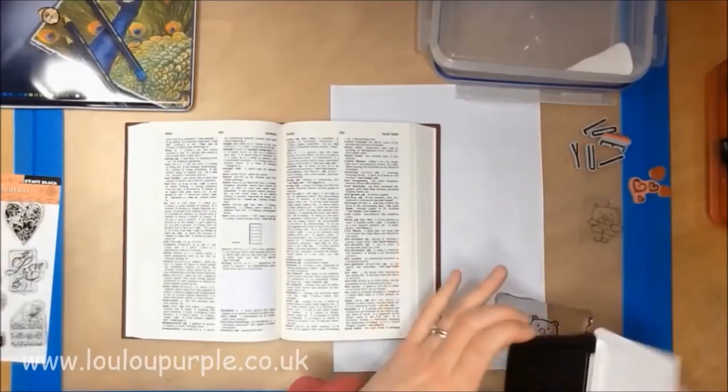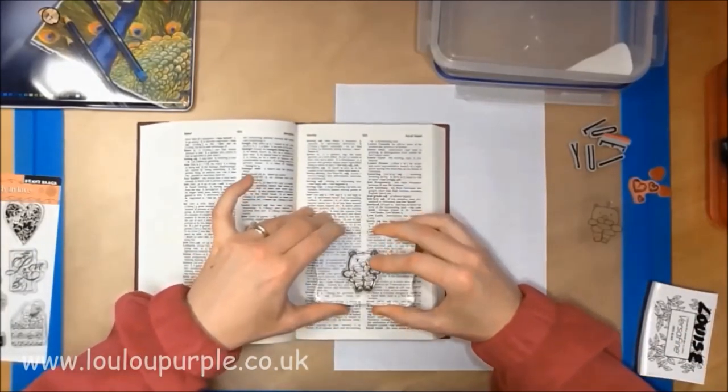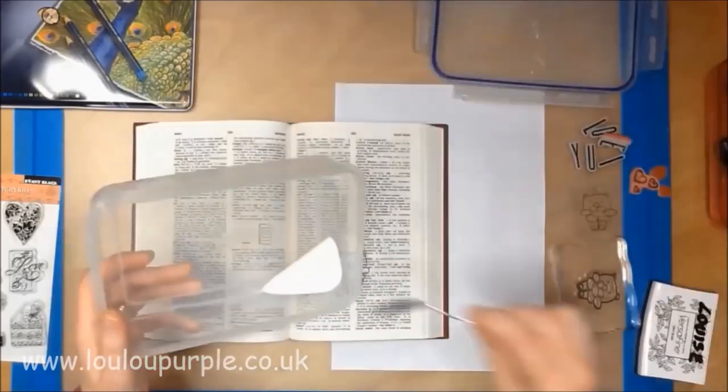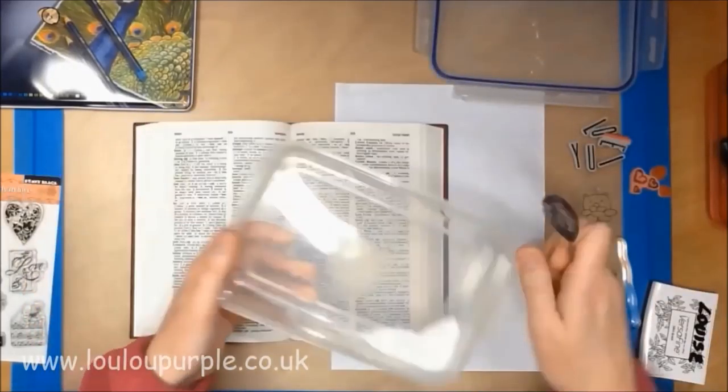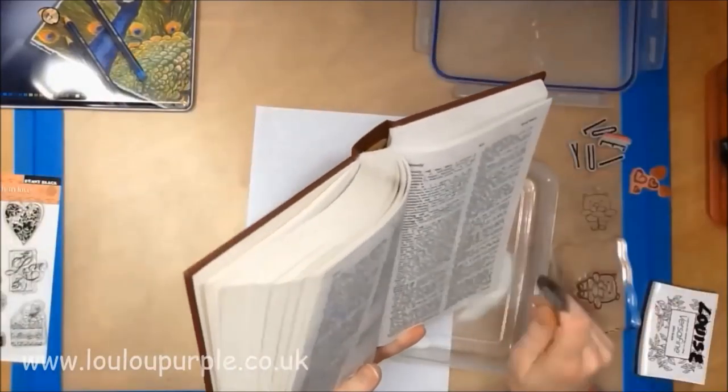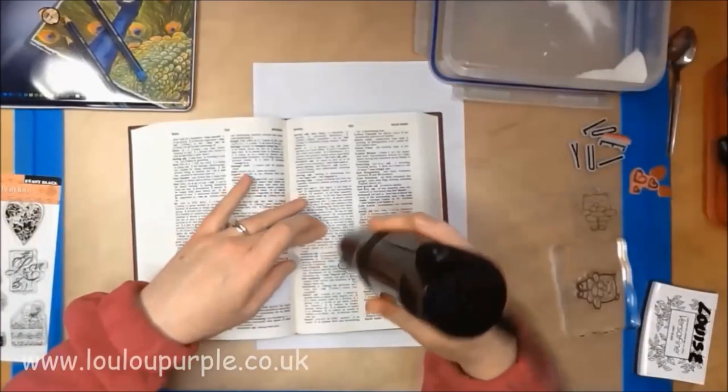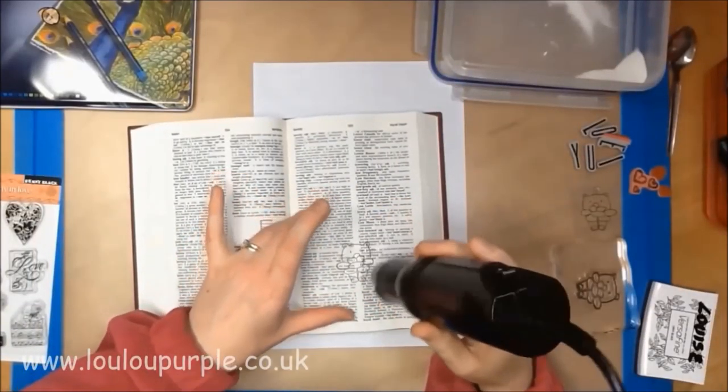Next I use my black Versafine ink pad and a free stamp which came from the craft stamper magazine. I am now using my clear cosmic shimmer embossing powder and I am just heating it up with my heat gun.